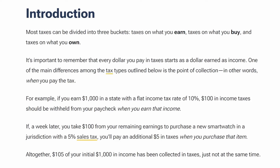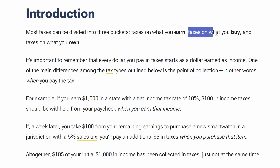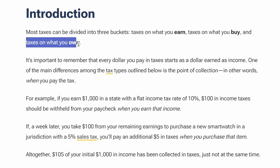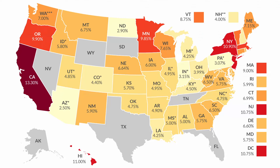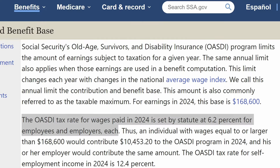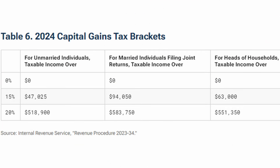There are three basic types of tax that we pay here in the United States. There are taxes on what you earn, there are taxes on what you buy, and there are taxes on what you own. The first one that most people think about is taxes on what you earn. For example, we have federal income tax, state income tax, FICA tax — which is social security and Medicare tax — self employment tax, which is double the FICA rate, and capital gains tax.